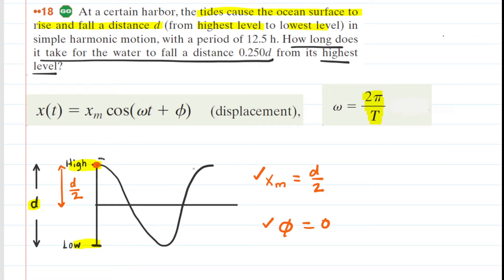Now, let's recall that at the highest level, the position is d divided by 2. So let's clean up our workspace here. We're going to take that highest level of d divided by 2, which could also be written as 0.5d. And again, the question says it's going to fall a distance of 0.25d. So if it falls a distance of 0.25d, we would subtract 0.25d from that highest position of 0.5d.